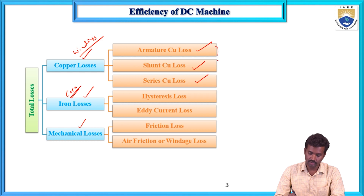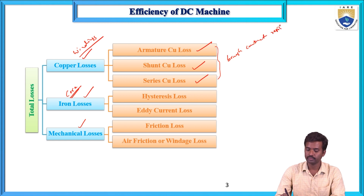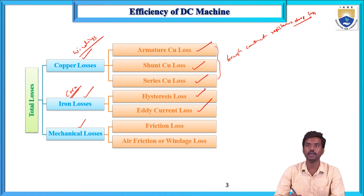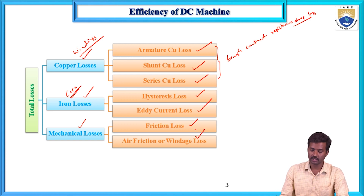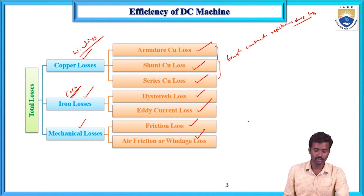Apart from winding losses, another loss is brush contact resistance drop. In iron losses, there are two types: hysteresis losses and eddy current losses. Mechanical losses include frictional losses and windage losses, which are air friction losses. To summarize, copper losses include armature copper loss, shunt copper loss, series copper loss, and brush contact resistance drop; then core losses and mechanical losses.